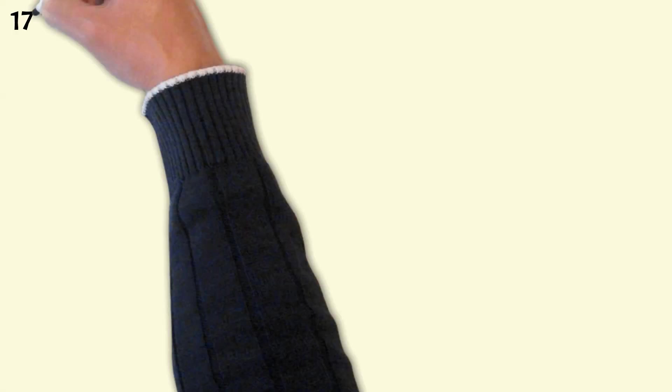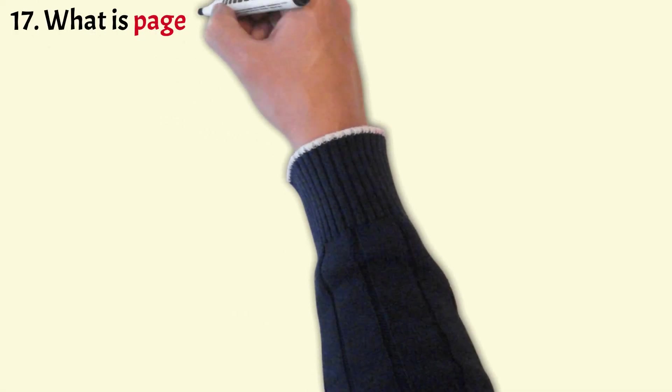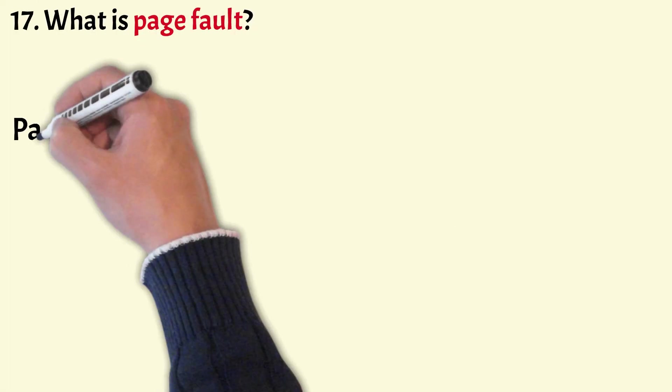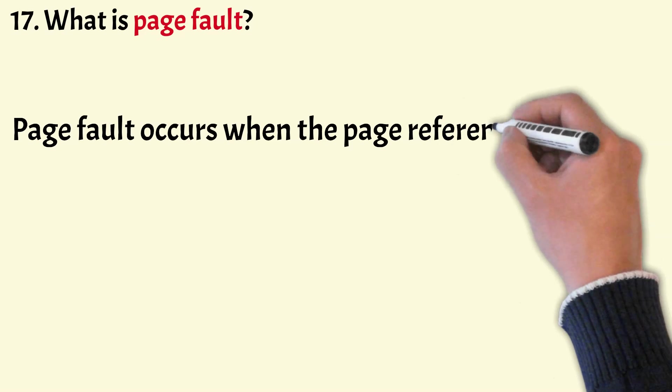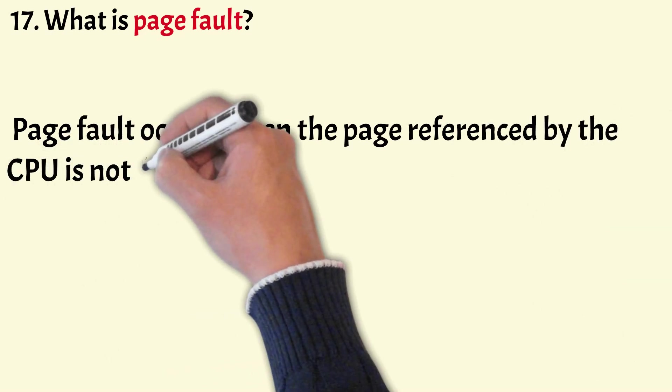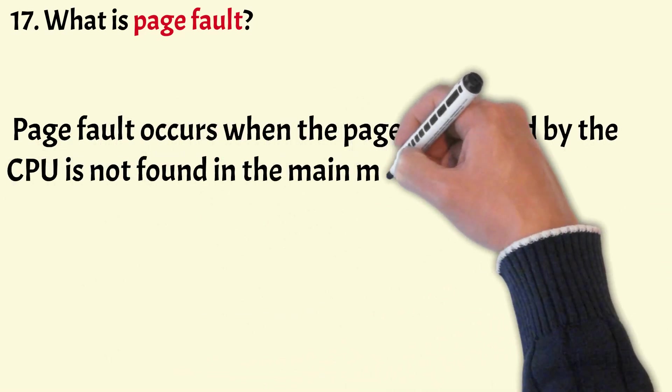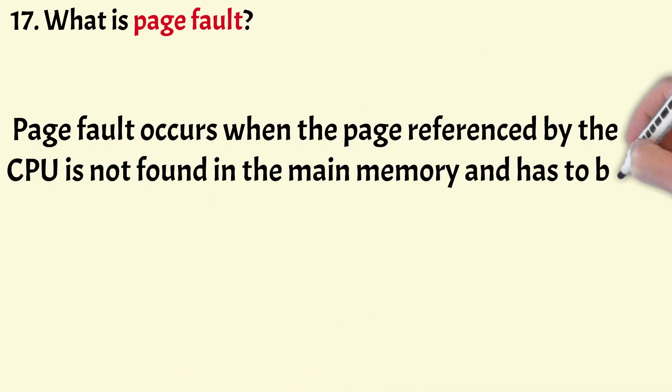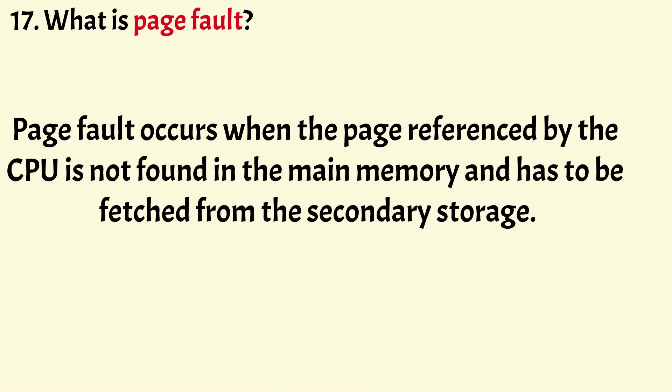What is a page fault? A page fault occurs when the page referenced by the CPU is not found in main memory and has to be fetched from secondary storage. A page fault notifies the operating system that it must retrieve the pages from virtual memory in order to continue execution.